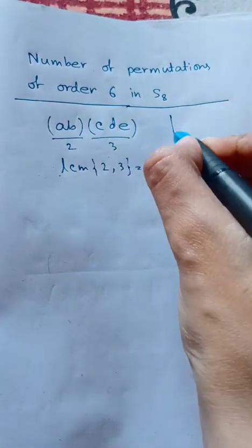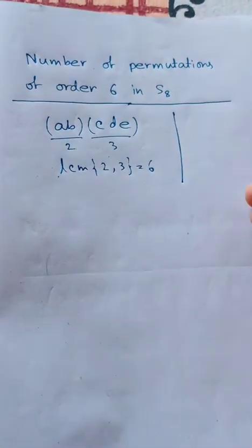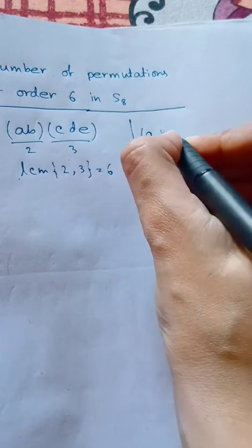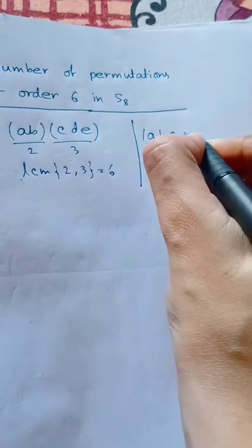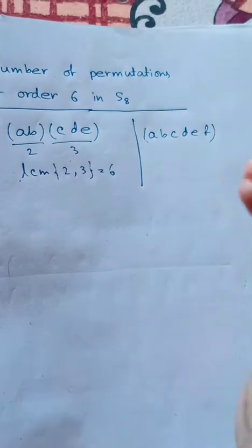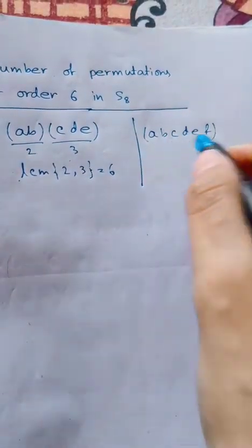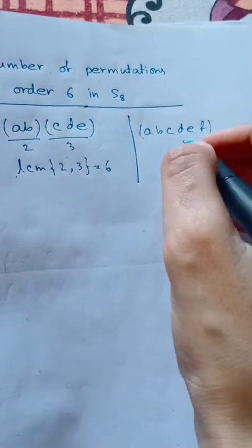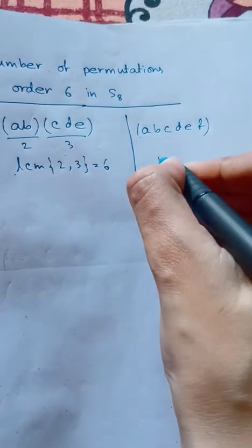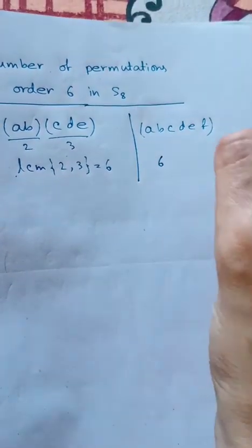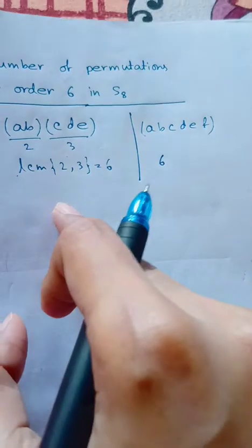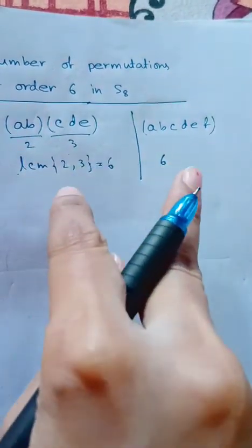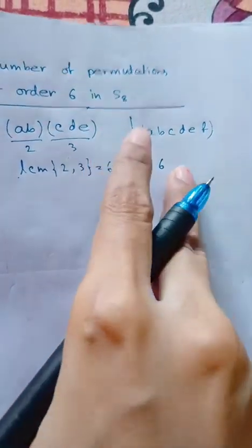The second type is a 6-cycle: (abcdef). Clearly, the order of this 6-cycle is 6. There are only these two possibilities for permutations of order 6 in S₈.